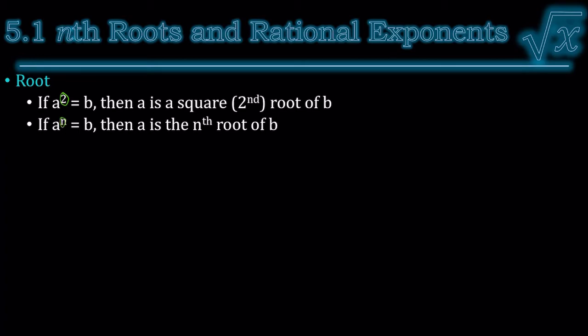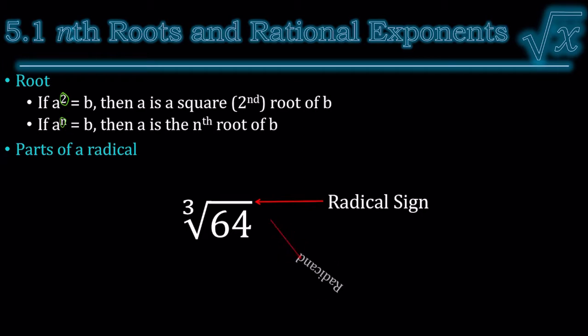We often write these as radicals. So here are the parts of a radical. This is the cube root of 64. The little checkmark thing is called a radical sign. The number inside of it is called the radicand. And the number up in the little hook is the index. The index tells you which root, so this is the third root, or cube root, of 64.